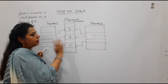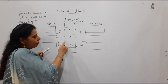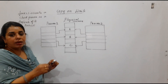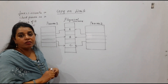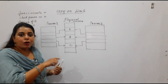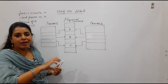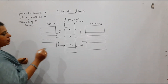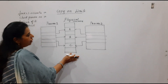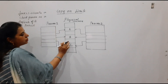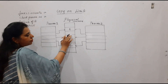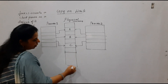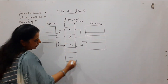If both processes are only reading, there is no issue. But if one of them — either the parent or the child — tries to write into a page, meaning it wants to modify the page, only then a copy of that page will be created. That is the name: copy-on-write. For example, if process one wants to modify page B, then a copy of B will be created in main memory.